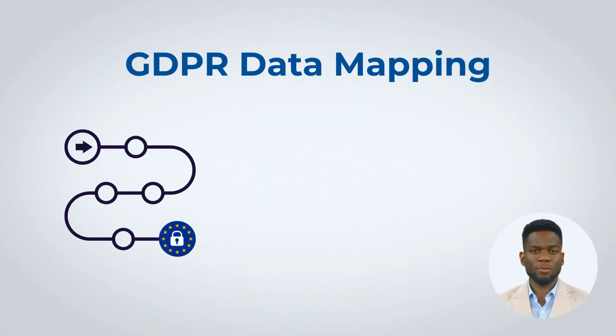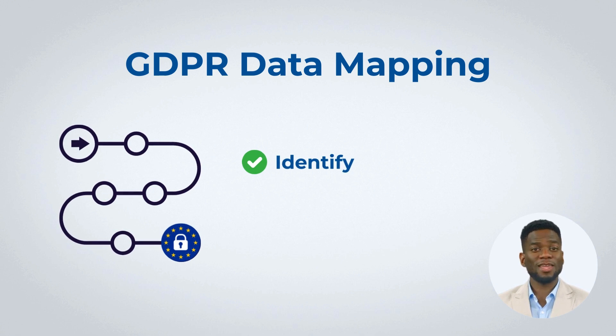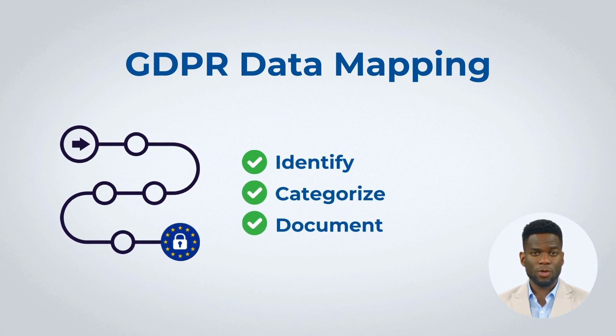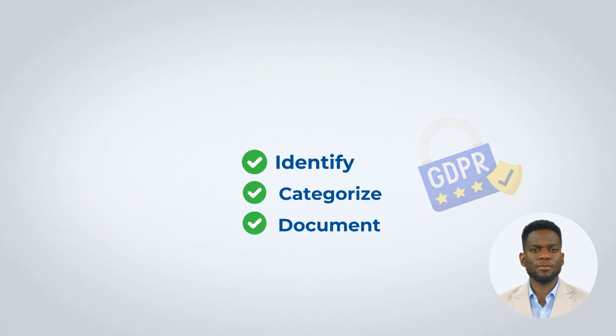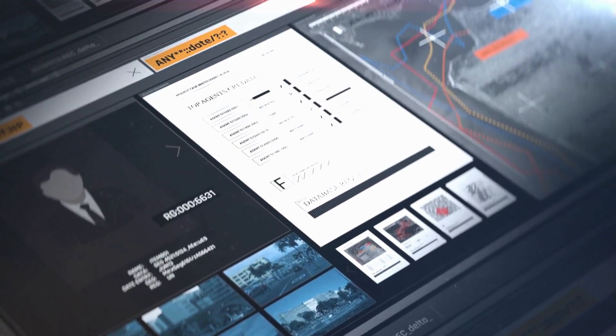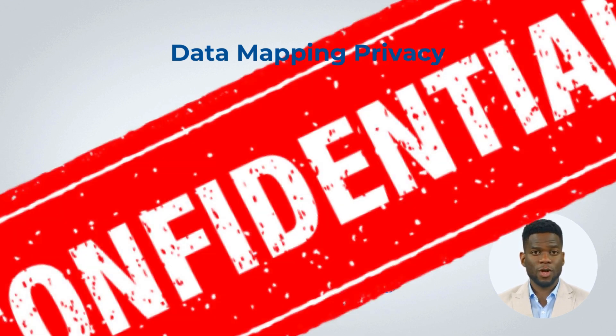GDPR data mapping is a methodical approach for organizations to identify, categorize, and document the movement of personal data, ensuring compliance with the General Data Protection Regulation. It focuses on protecting individuals' privacy rights while understanding data types, processing purposes, and data flow. Data mapping privacy ensures that personal data remains private during mapping.